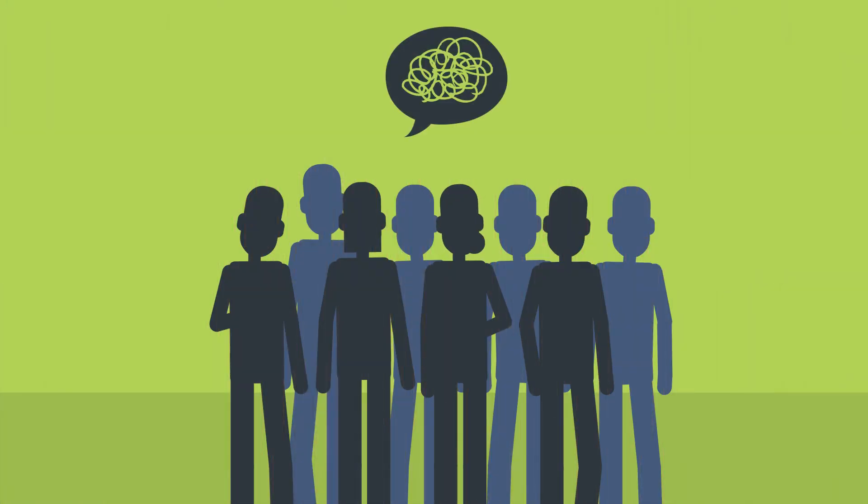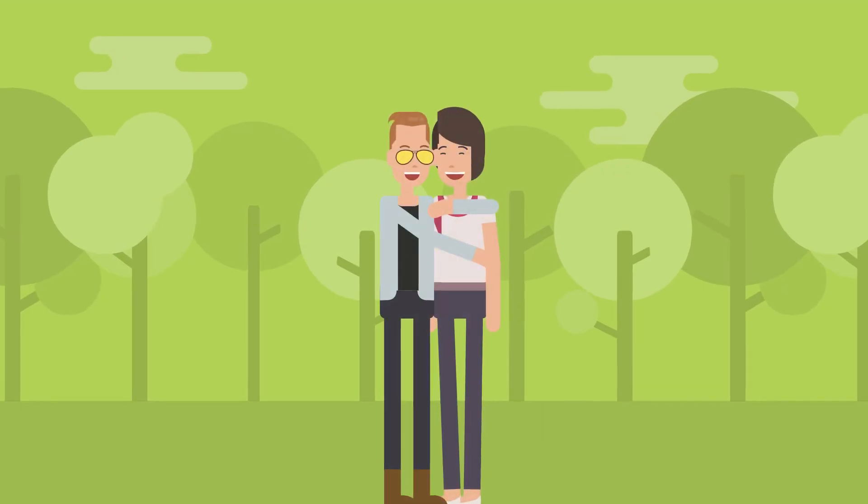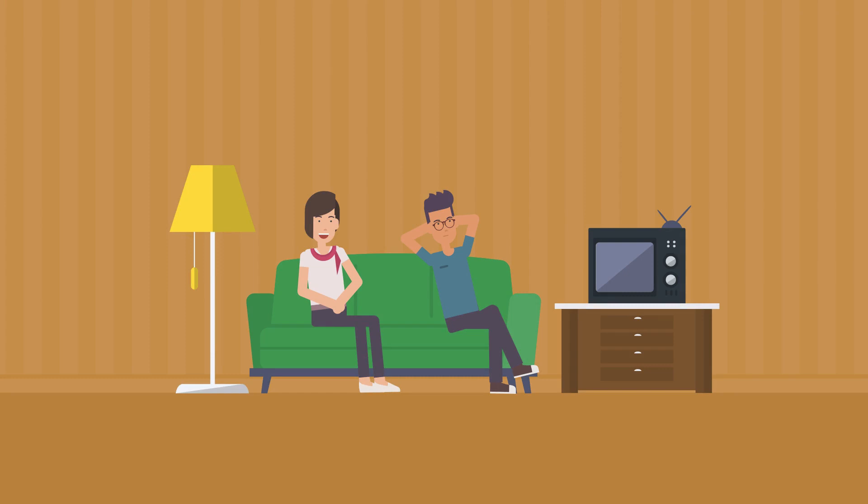It's also important to note that the way people define and perceive infidelity can vary widely. For some, cheating may involve physical intimacy with someone outside of the relationship, while for others it may include emotional infidelity or simply having strong feelings for someone else.